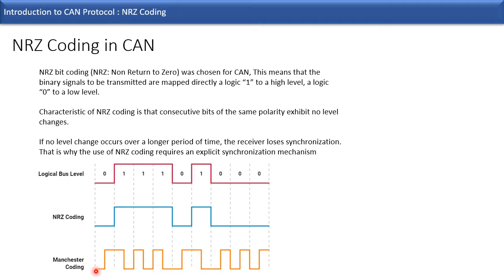In Manchester coding, the first half bit phase is represented as zero and then the next half bit phase switches back to one. For bus level one, in NRZ coding it is directly represented as bus level one, but in Manchester coding the first half bit phase is represented as one and switches back to zero. Thus in NRZ coding, for same polarity bits there is no level change in the bus.